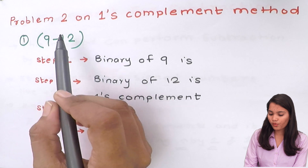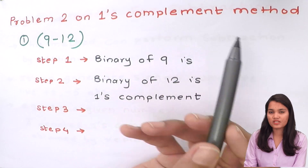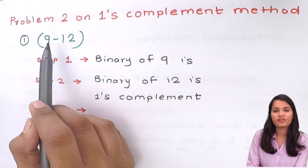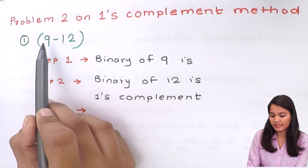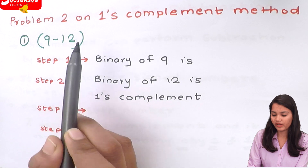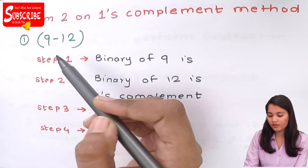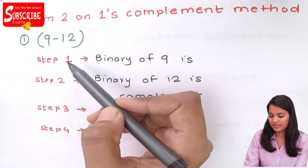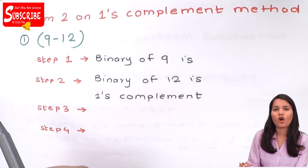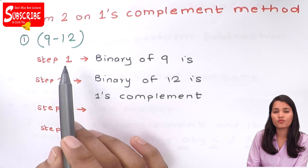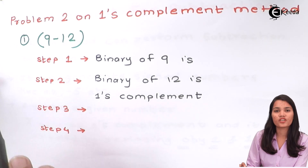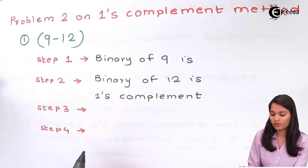Now we are going to perform the one's complement method for subtraction. Here we have two numbers, that is 9 and 12. We are going to perform subtraction step by step. Always remember you have to go with each step so that you will never get your answer wrong.